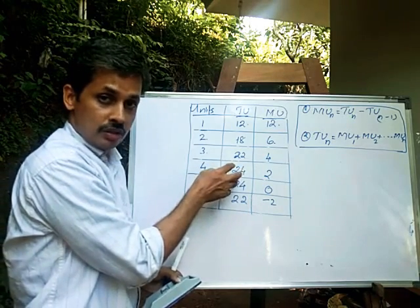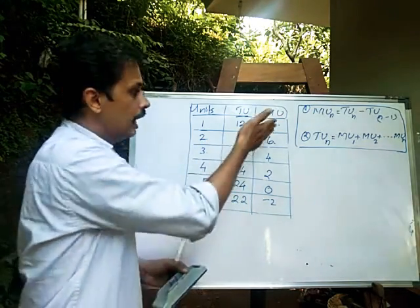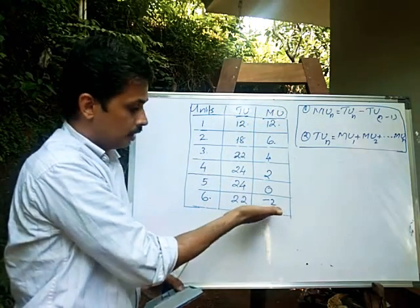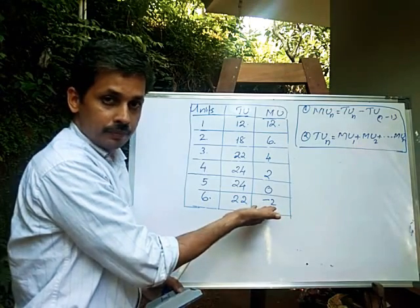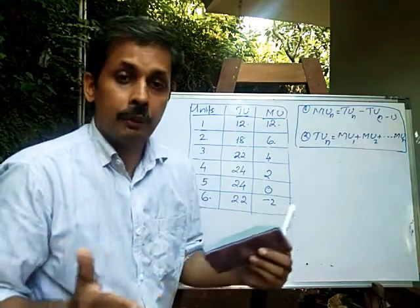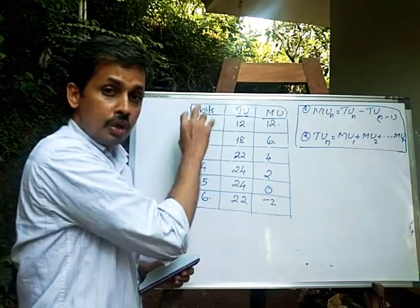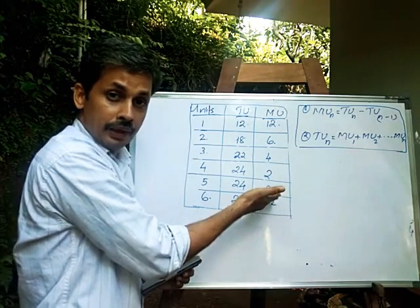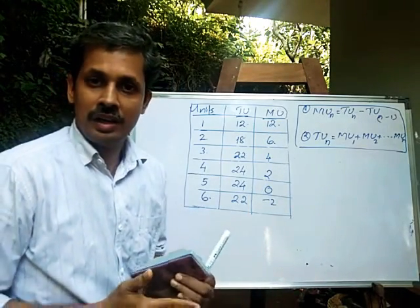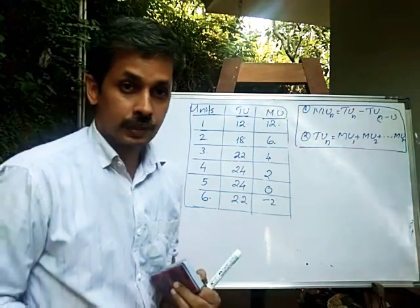As we can see, after a certain point the total utility stays the same, and from the sixth unit onwards marginal utility becomes negative. This is the law of diminishing marginal utility — as each additional unit is consumed, the marginal utility keeps decreasing. That is the law of diminishing marginal utility, which is an important examination point.